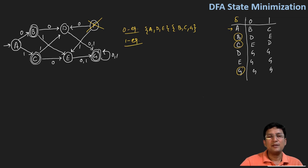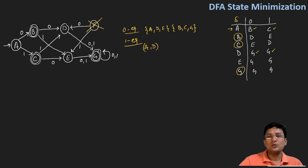For the one equivalence, I'll find out the pairs. I'll first take the pair A and D. A on getting symbol zero goes to B, and D on getting symbol zero goes to G. So B and G are in the same set. A on one goes to C and D on one goes to G — C and G are in the same set. Hence, A and D are one equivalent.